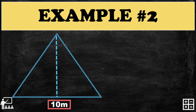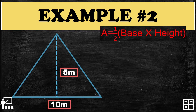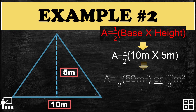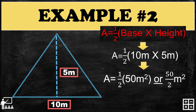Example number 2 has a base of 10 meters and a height of 5 meters. Just use the formula and substitute the measurements. 10 times 5 gives you 50, and divide it by 2. 50 divided by 2 gives you 25 meters squared.